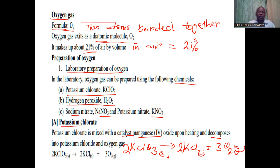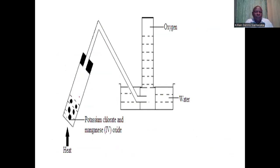This is the decomposition and you require the catalyst manganese IV oxide. This is the experiment that you can set up in the laboratory. You need to apply some heat where there is a mixture of manganese IV oxide as well as potassium chlorate, and then the gas will be evolved through this delivery tube.